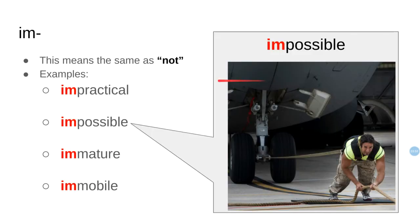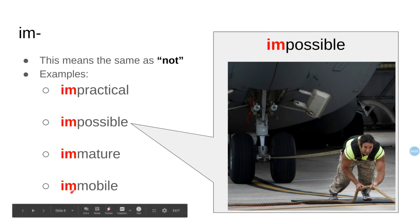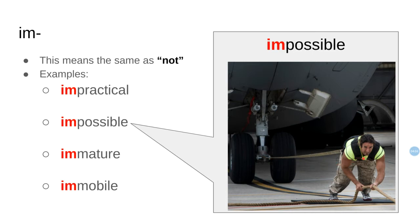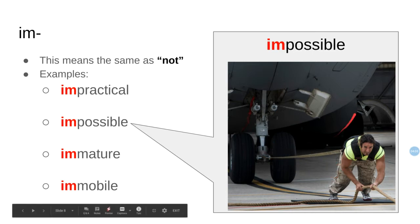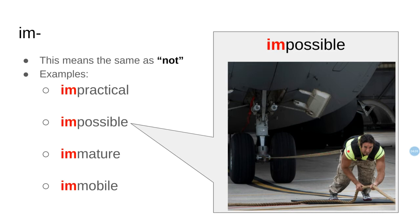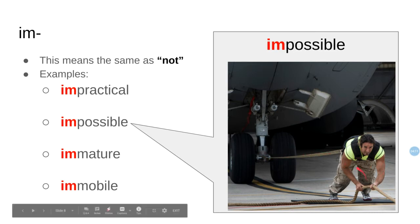Then we have 'im-,' which means the same as 'not': impractical, impossible, immature, immobile. Look at this picture — this man is pulling a huge plane with his legs and arms. This is not possible, this is impossible.